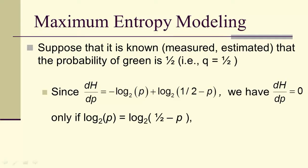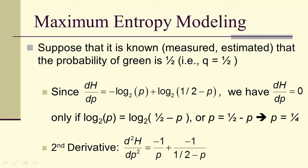So that means the derivative is given by this expression, and the derivative is therefore 0 only if the log base 2 of p is the log base 2 of 1/2 - p, which is p equals 1/2 - p, which is p equals 1/4.